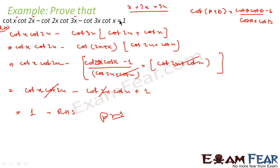So how did we solve this? We observed that x plus 2x equals 3x. We took 3x common and wrote 3x as x plus 2x. Solved it, and everything got cancelled.